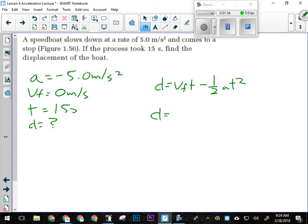So I'm going to go D equals 0 minus 1/2 times negative 5 times 15 seconds. So 15 squared. That's going to make sure I get the right vector on my answer.